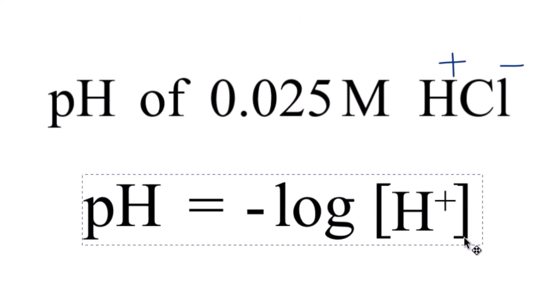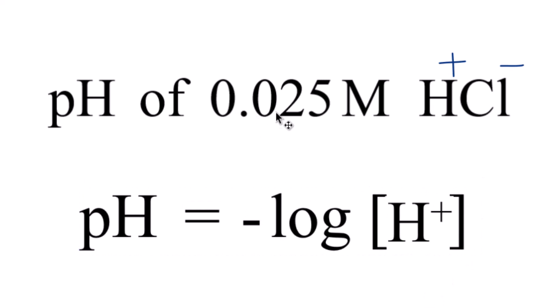So we can use this formula here to figure out the pH of our 0.025 molar solution of HCl. We're going to take the negative log of the concentration of the hydrogen ion, the H plus, this H plus right here, and that's the H in pH.